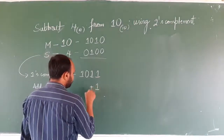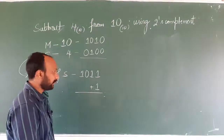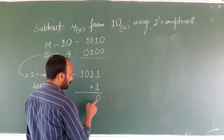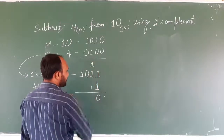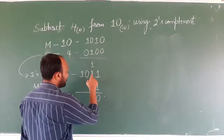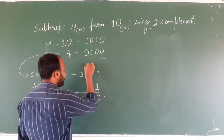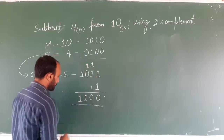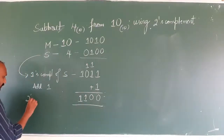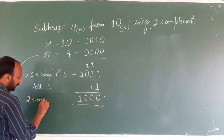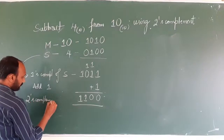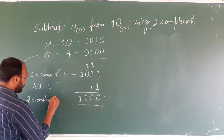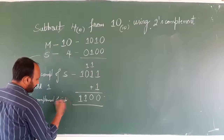We will be adding 1 to the rightmost bit. If you add 1 here: 1 plus 1 is 0, and 1 will be carried to the next higher column; again 1 plus 1 is 0, carry 1 to the next higher column; again 1 here, again 1. So this is the two's complement of the subtrahend.